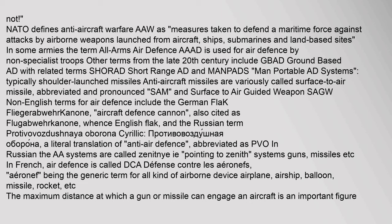NATO defines anti-aircraft warfare (AAW) as measures taken to defend a maritime force against attacks by airborne weapons launched from aircraft, ships, submarines, and land-based sites. In some armies the term All-Arms Air Defense (AAAD) is used for air defense by non-specialist troops. Other terms from the late 20th century include GBAD (ground-based AD), with related terms SHORAD (short-range AD) and MANPADS (man-portable AD systems), typically shoulder-launched missiles. Anti-aircraft missiles are variously called surface-to-air missile (SAM) and surface-to-air guided weapon (SAGW).